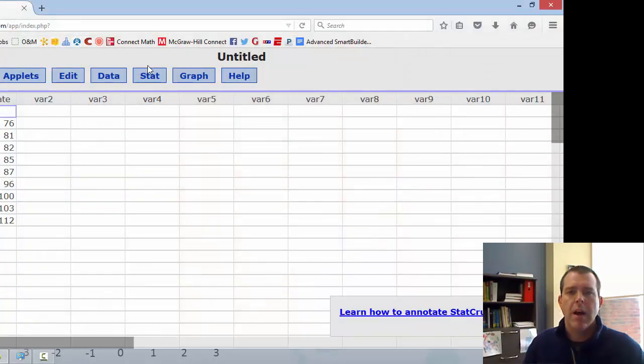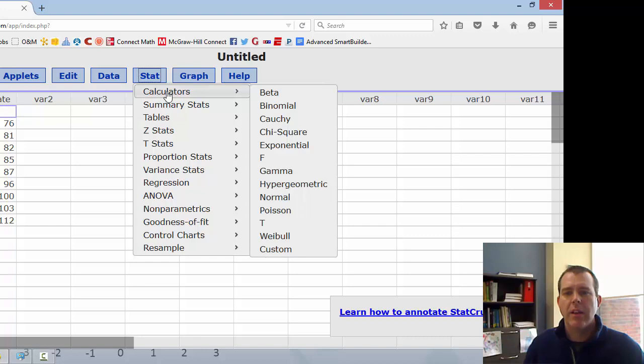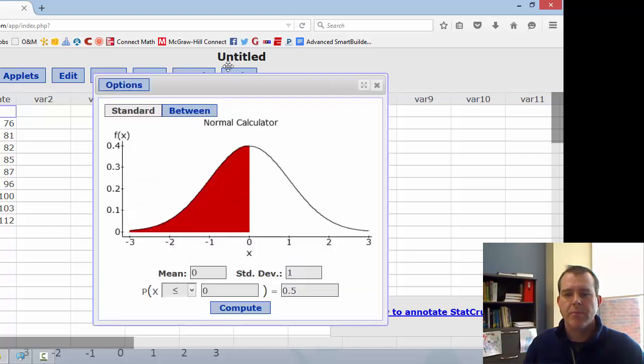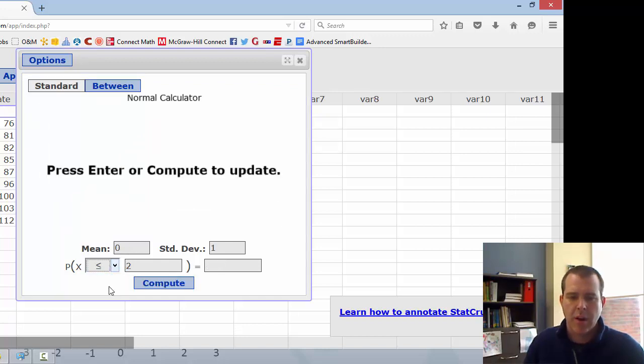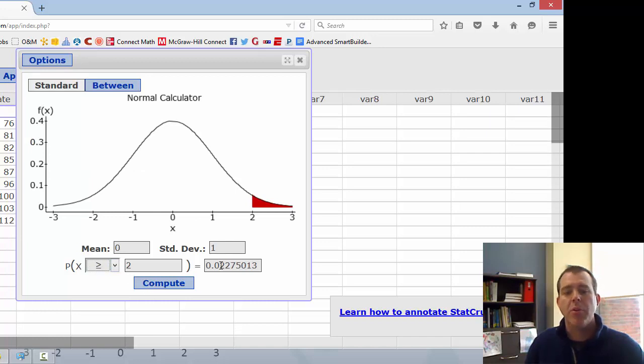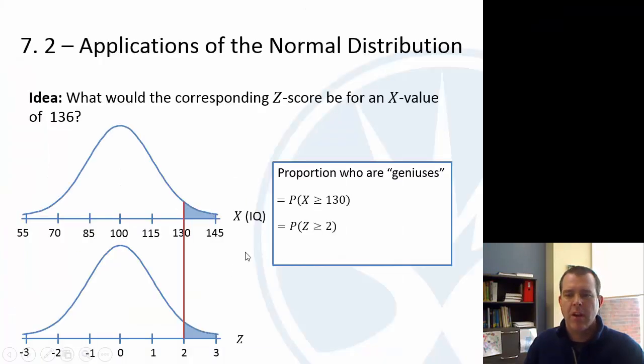I want to go to, not to my kids, what is the one I want? There we go. We can do stat, calculators, and normal. And we'll do 0, let's see, mean is 0 and 1, less than or equal to 2, except I want to go greater than or equal to. And there's compute. So we have a probability of .0228. Usually we do four decimal places here. There's no hard rule that you have to, but that's usually what we do.